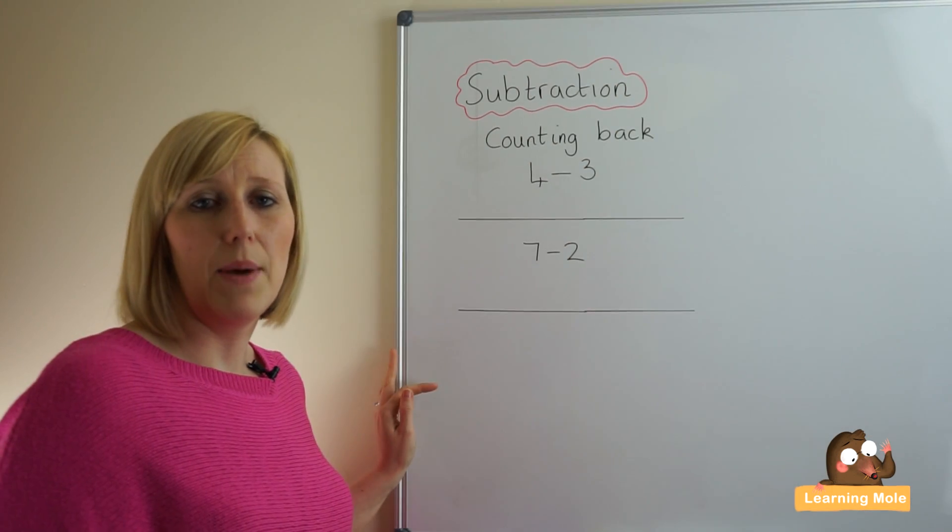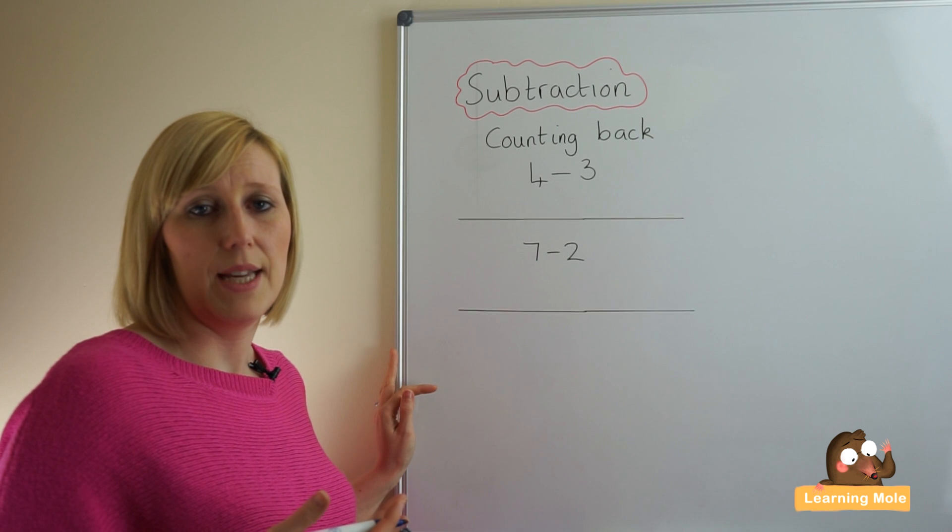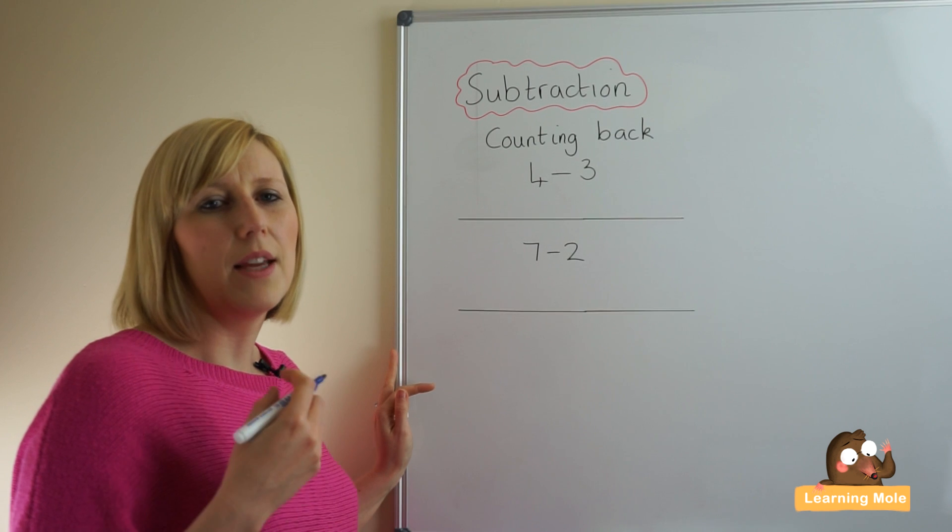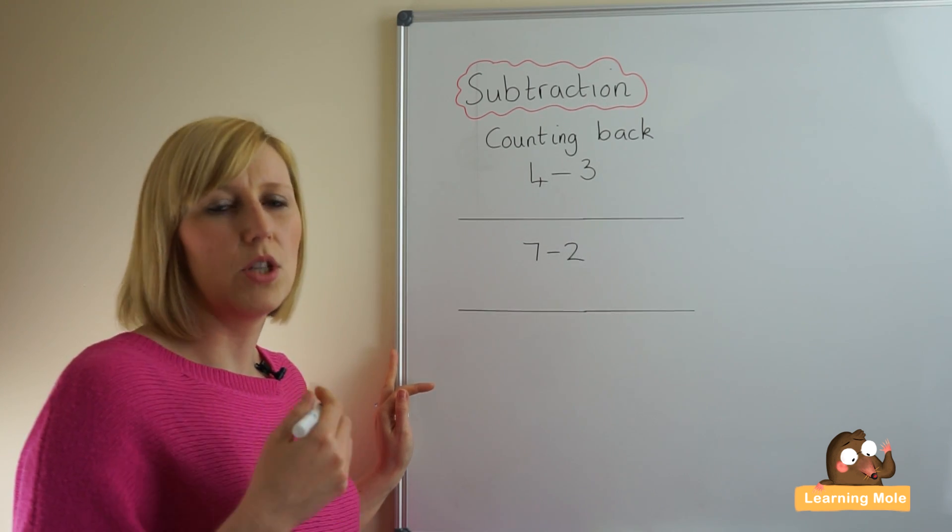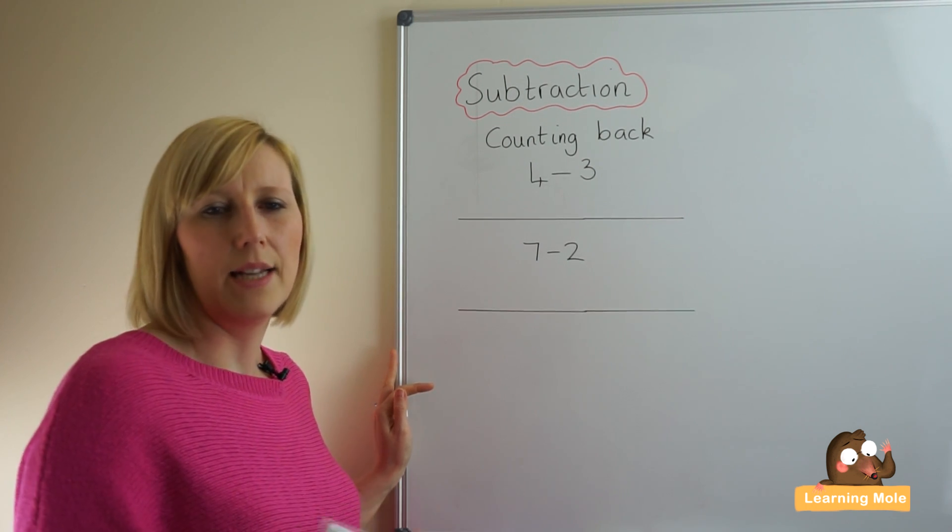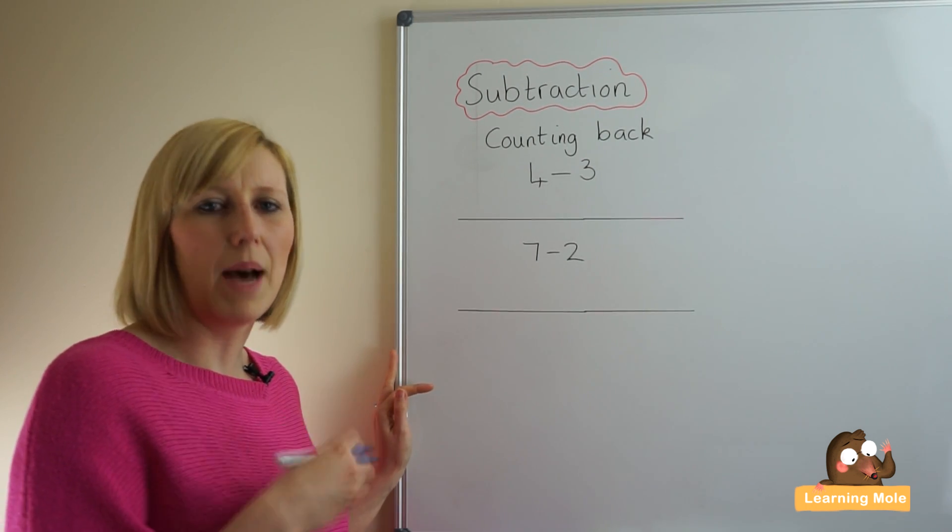So let's look at 4 take away 3, 4 subtract 3. When I'm using a blank number line I always put the idea into the child's head that they're counting back. So I always put the 4, the number that they're taking away from, at the end of the line to really foster the idea of actually counting back.